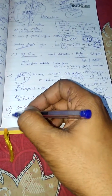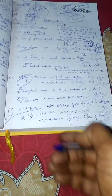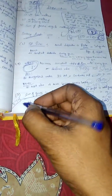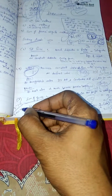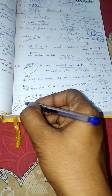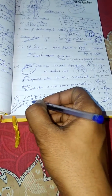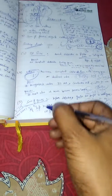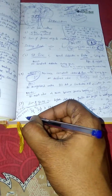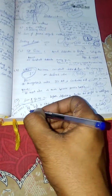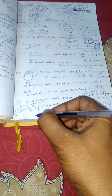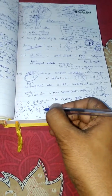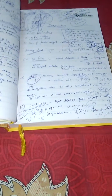Similarly, if the life of an asset is 5 years, then 5 plus 4 plus 3 plus 2 plus 1 equals 15. So in first year depreciation will be 5 by 15 into value of an asset. Second year depreciation will be 4 by 15 into value of an asset, and so on.